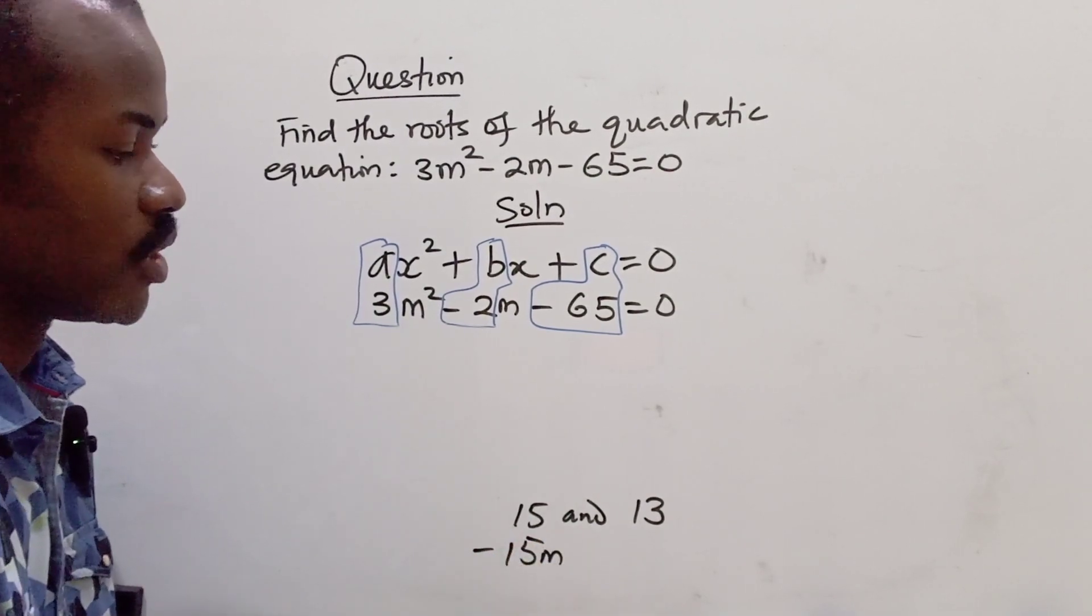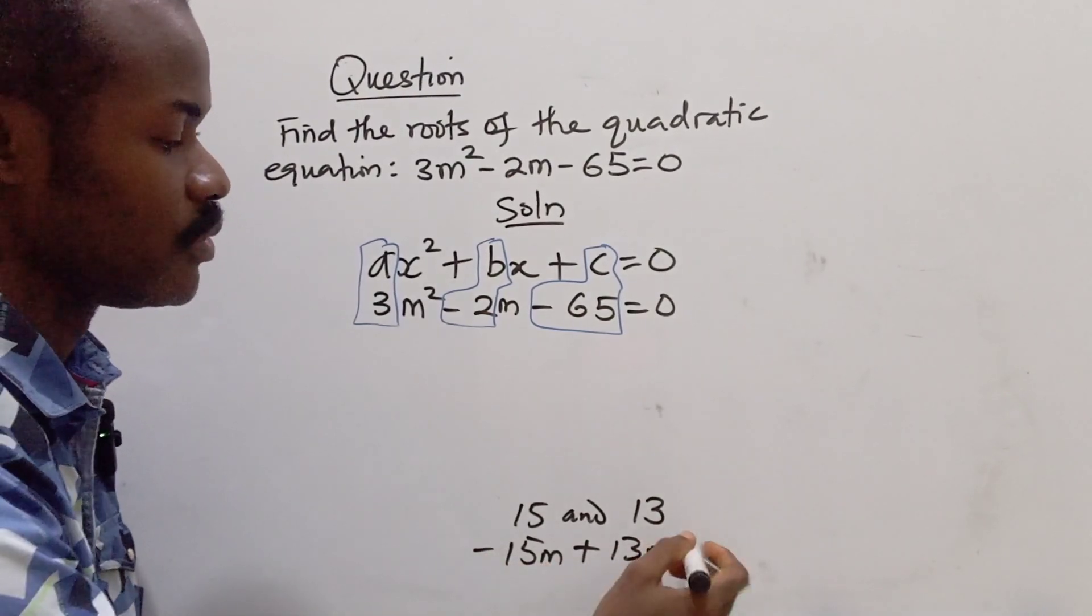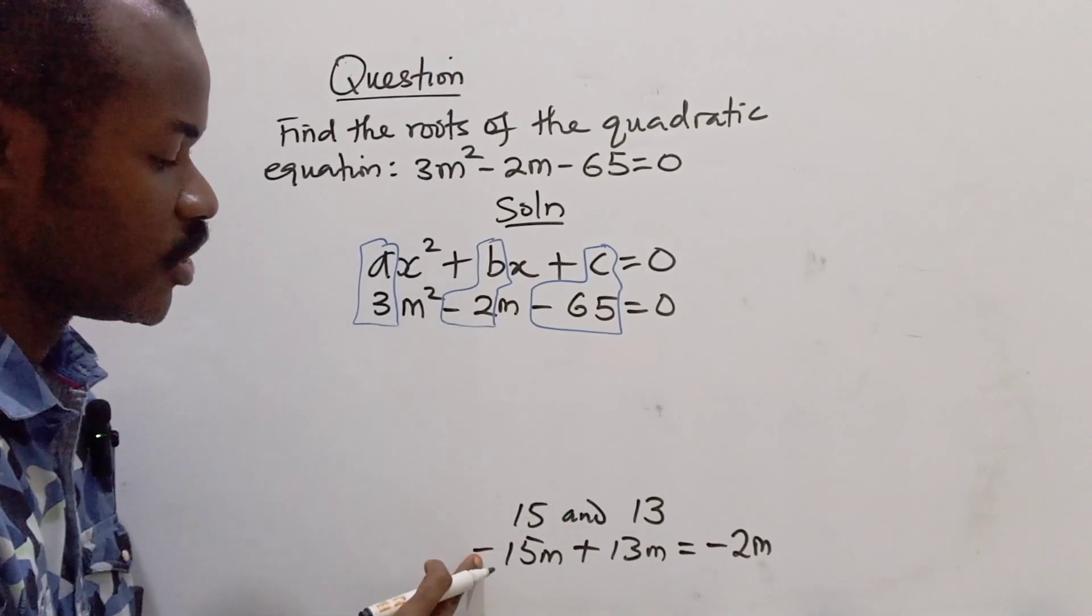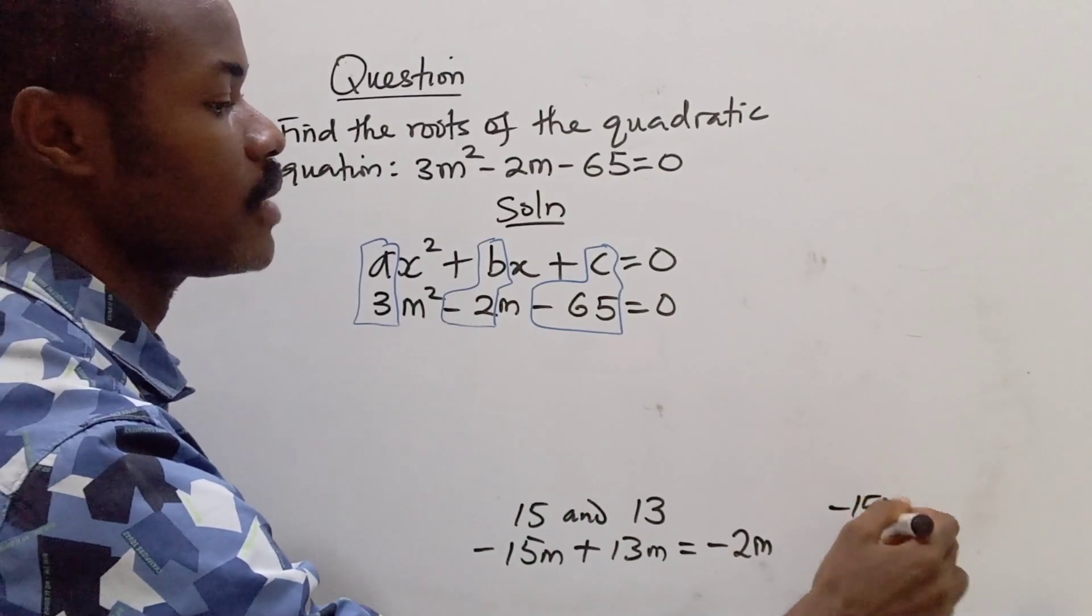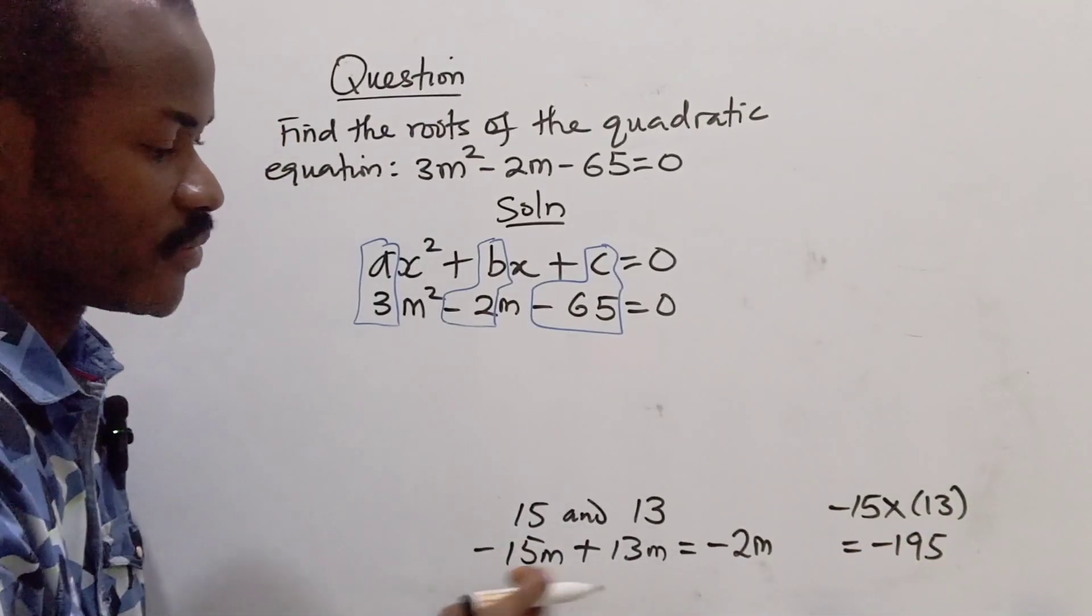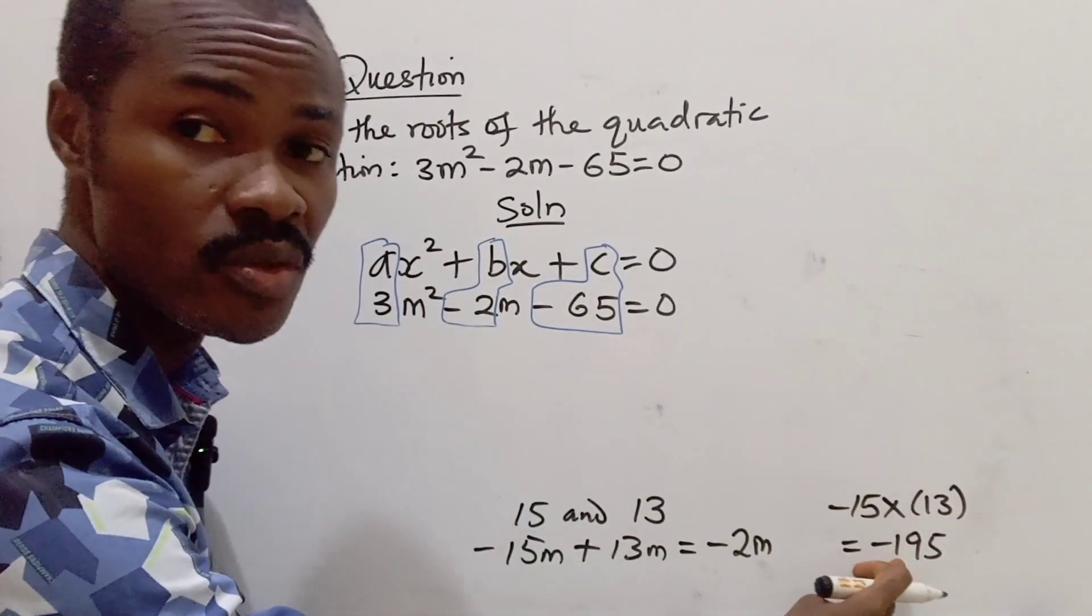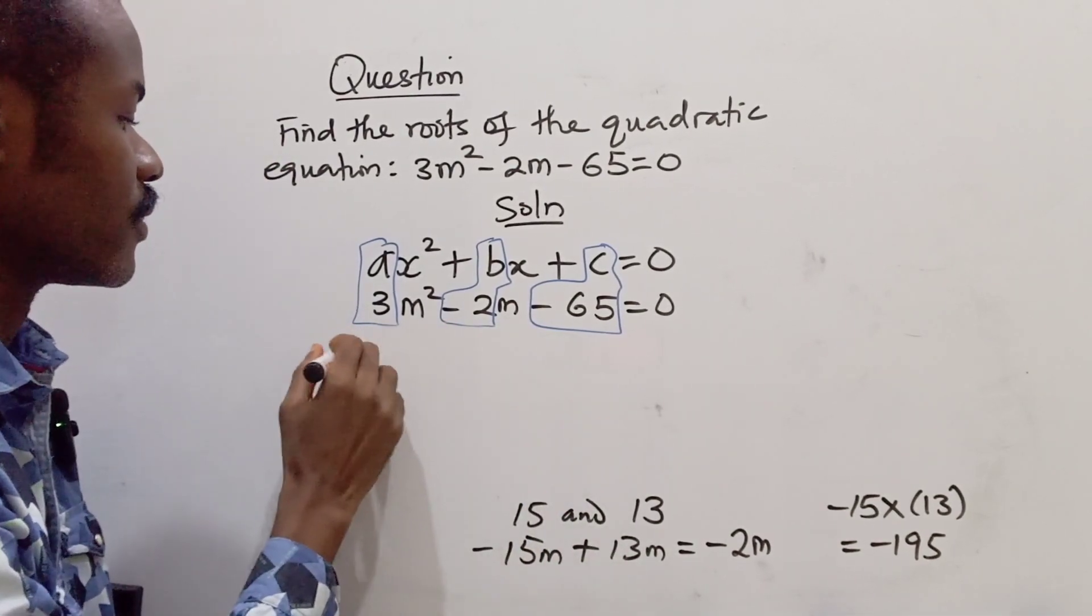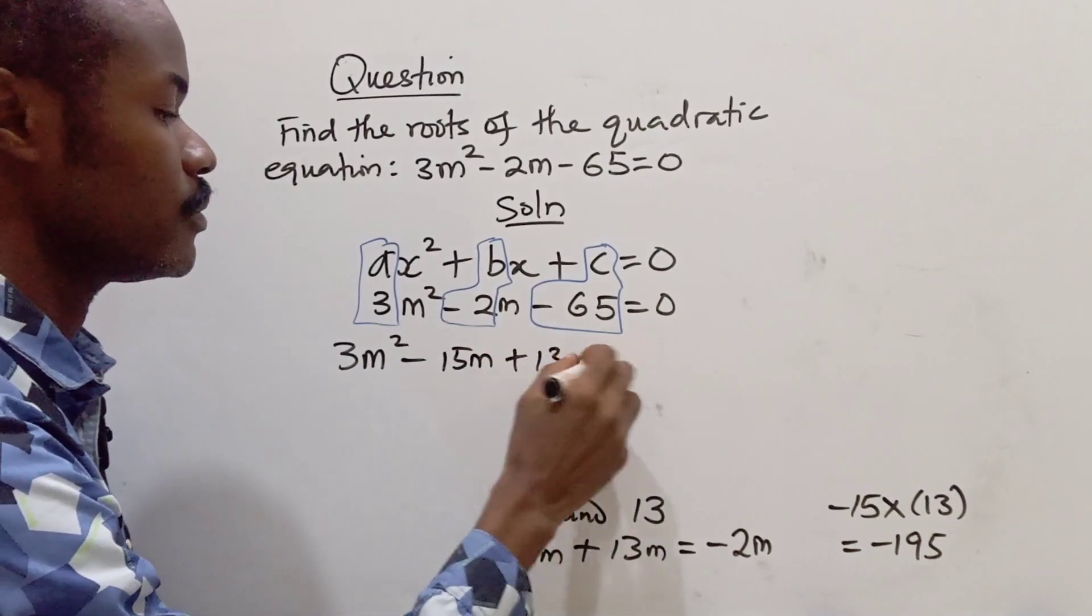We have to check because we want to replace all this -2m. Could I say -15m plus 13m? So if we check this out, -15m + 13m is going to give us -2m. So this can replace this. Now if you also check, -15 multiplied by +13 is also going to give us -195. So -15 and +13 satisfies the two numbers whose sum will give us -2 and their product will give us -195.